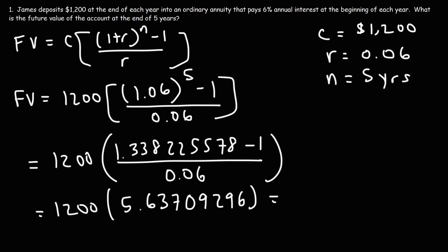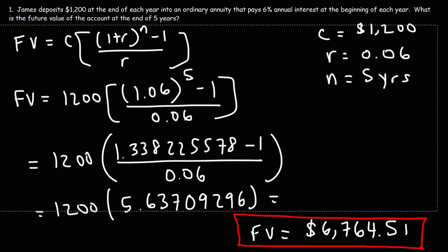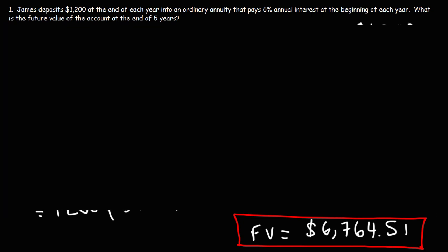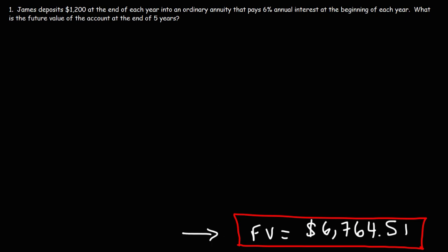Multiplying 5.63709296 by $1,200, the future value of the account at the end of five years will be $6,764.51. So this is the answer to the problem. Now let me show you another way to get this answer — it's a more tedious method, but it will help you understand the process of getting to the answer.